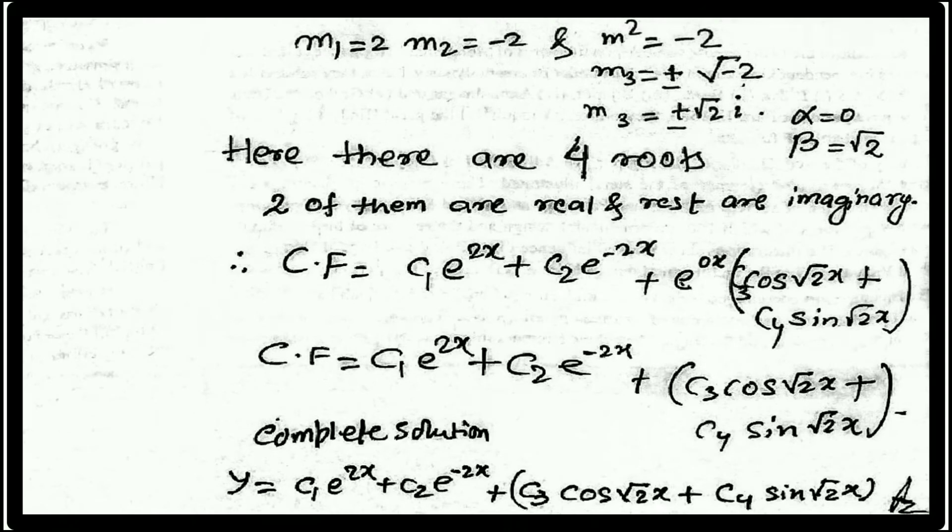So m₃ and m₄ equal to plus minus square root of minus 2, which is a complex root which doesn't contain alpha. Simply the complex root has the form alpha plus i beta. Here alpha is absent, only beta is present, so the third and fourth roots are the imaginary roots.